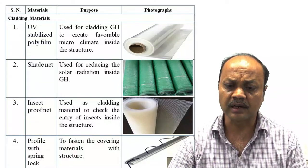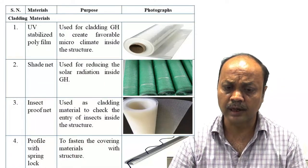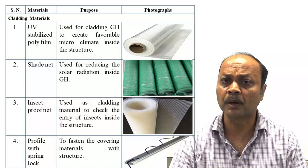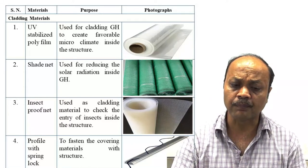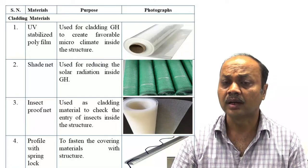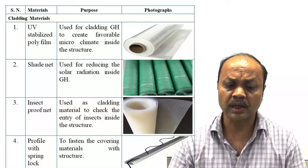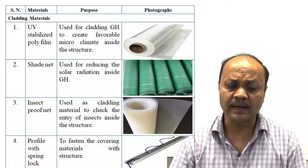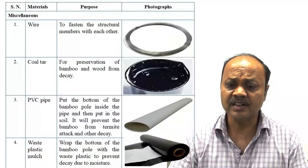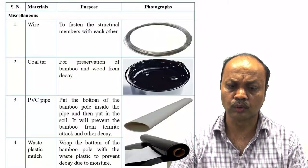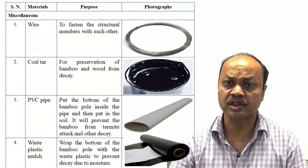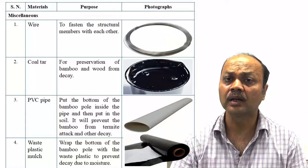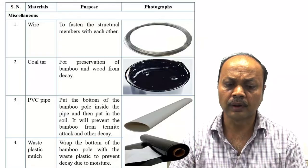For cladding materials in low cost greenhouse, UV-stabilized film is used to create the microclimate. Shade net material is used inside for controlling light intensity and temperature to make the microclimate suitable. Insect proof net is used at ventilation areas. Profile and grip are used to fix the cladding material. Wire is used to fasten structural members, and coal tar coating is applied to bamboo parts going into the soil to preserve from decay and termite.